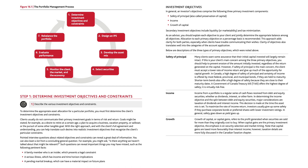You can also learn a lot from a concluding general question such as: 'Is there anything we haven't talked about that might be relevant?' Such questions can reveal important things you may have missed, such as a family member who is an insider (which represents a legal constraint), a serious illness (which has income and time horizon implications), or a pending marital breakup, which can have a material impact on future plans.